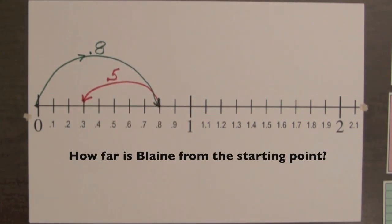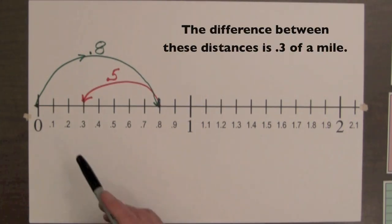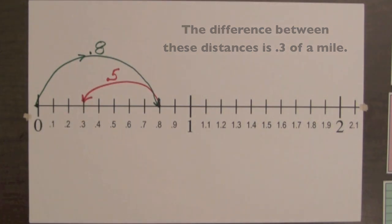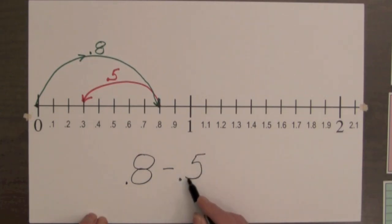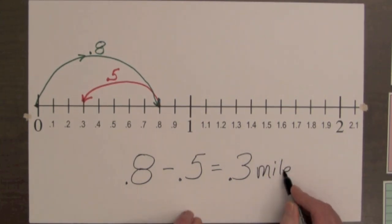How far is Blaine from the starting point? The difference between these distances is 3 tenths. So 8 tenths minus 5 tenths equals 3 tenths. And Blaine is 3 tenths of a mile from the starting point.